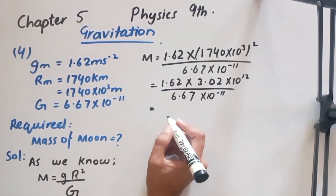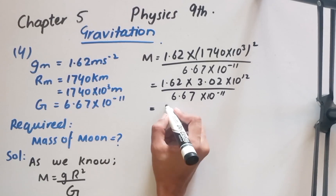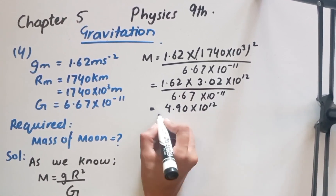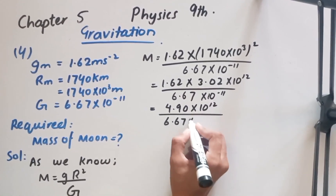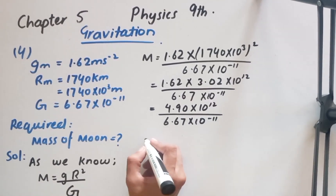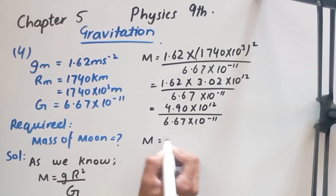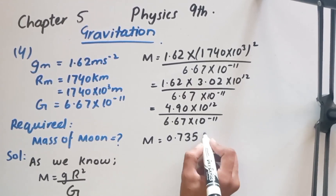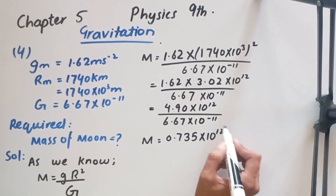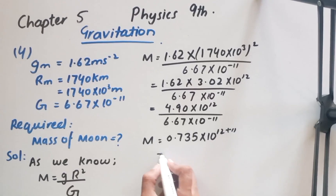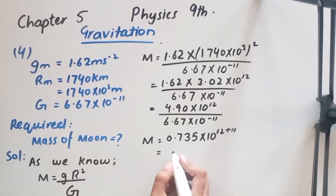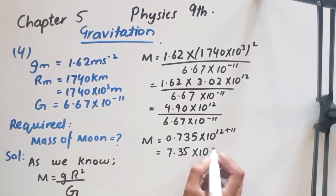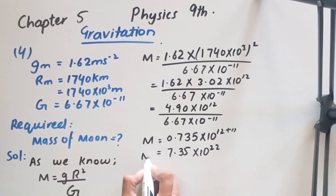This gives us 4.90 × 10¹² over 6.67 × 10⁻¹¹. Dividing 4.90 by 6.67 and combining the powers of 10, our final answer for the mass of the moon is 7.35 × 10²² kg.